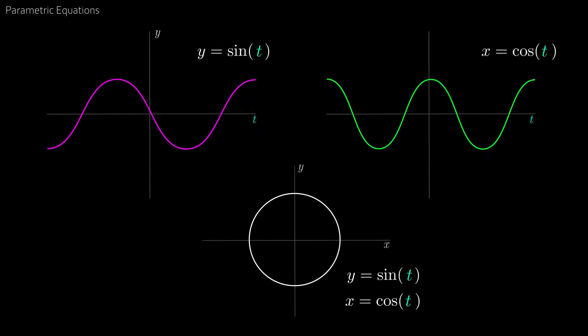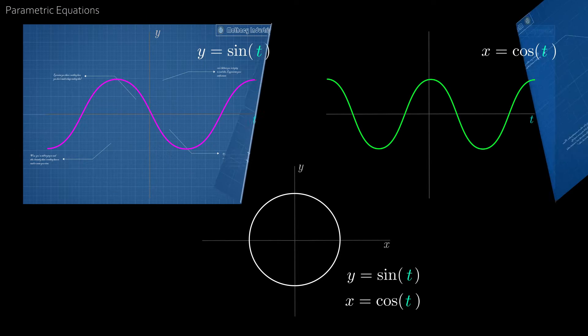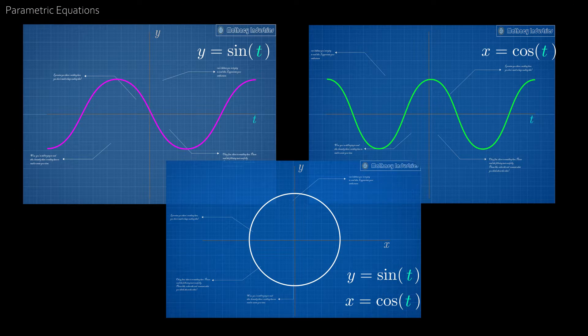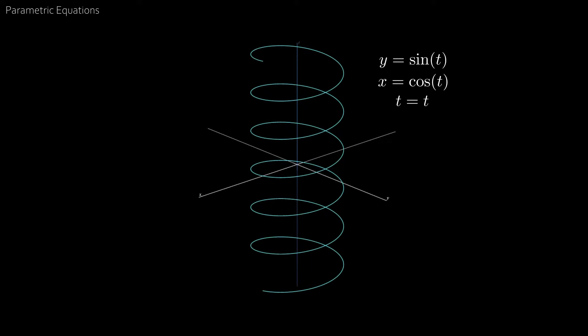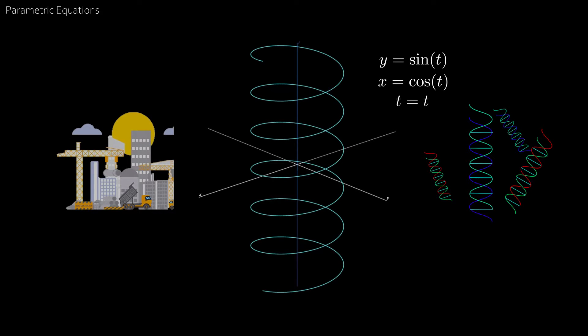But actually this isn't the full picture. What we have are blueprints for the full structure of this equation. And that structure is the three-dimensional spiral or helix, which is extremely useful in construction and biology.